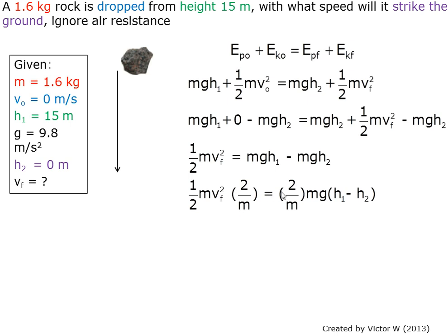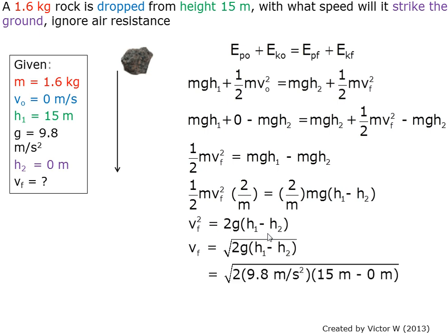Multiplying by 2 on each side and dividing by m from each side, we have v² equals 2g times (h₁ minus h₂).